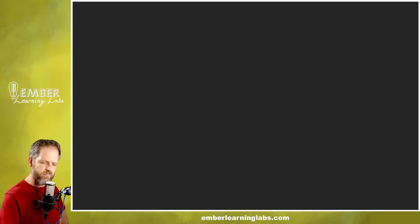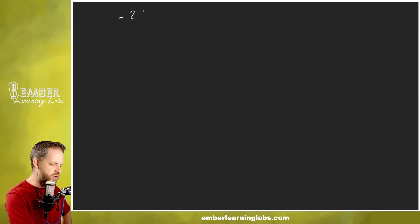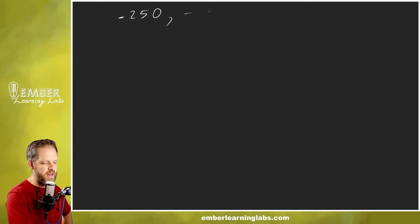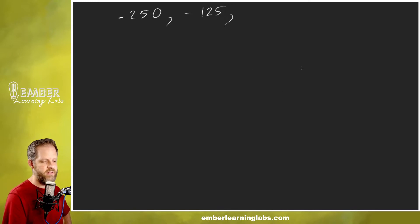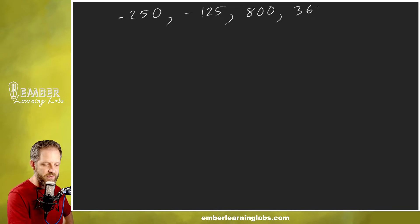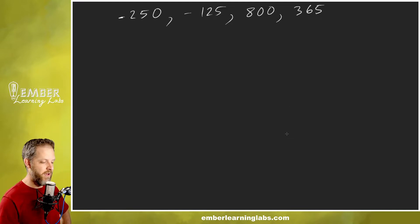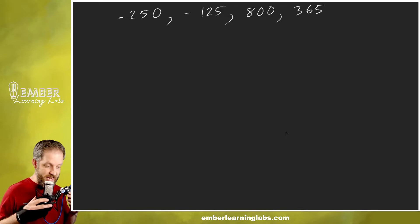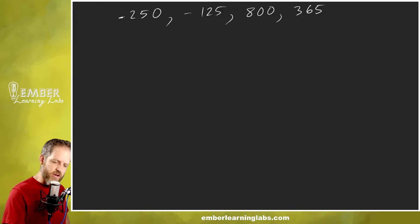Now, what if we have an example with the same instructions but the numbers are approximately: negative 250, negative 125, 800, and 365?